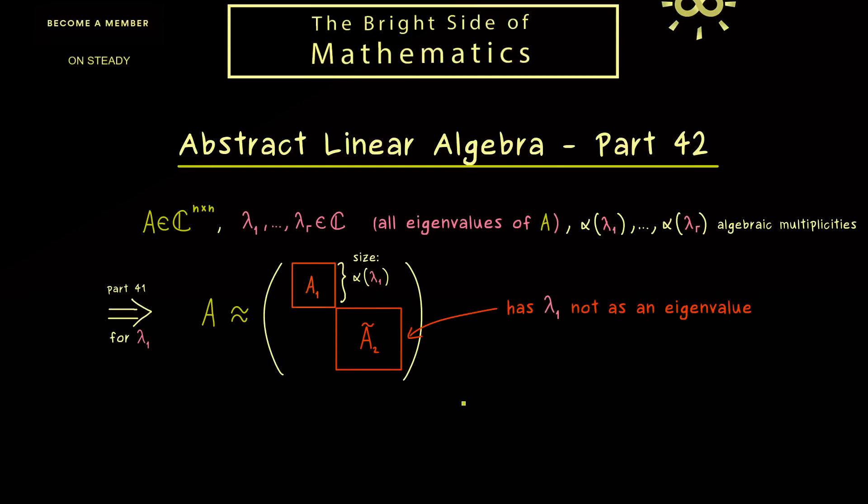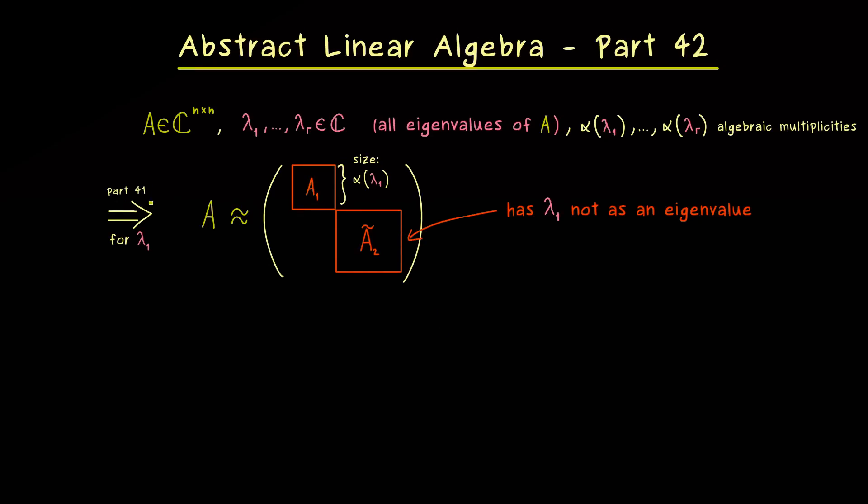Therefore, it should not surprise you that we want to apply our result from part 41 again for the second block. And moreover we can also just do it for the next possible eigenvalue in the list. Hence what we get is again a block diagonal matrix. So we get our A₂ and something we call A₃ tilde. And now we can use our two pieces of information again. Which means we have the size of the first block given by the algebraic multiplicity. And on the other hand, the third block here does not contain our two eigenvalues.